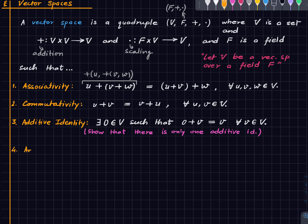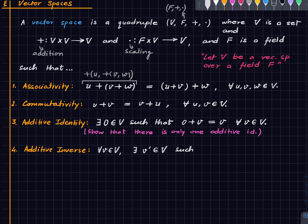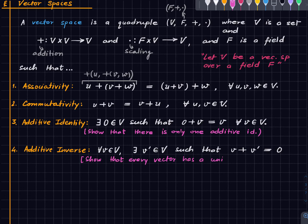Fourth is the additive inverse: for all vectors v in V, there exists some v' such that v + v' equals the additive identity. Just like in fields, this is unique. We call it the additive inverse of v, and it is denoted by −v. So every vector has a unique additive inverse.